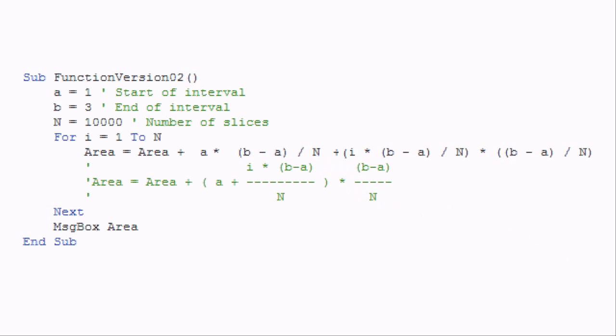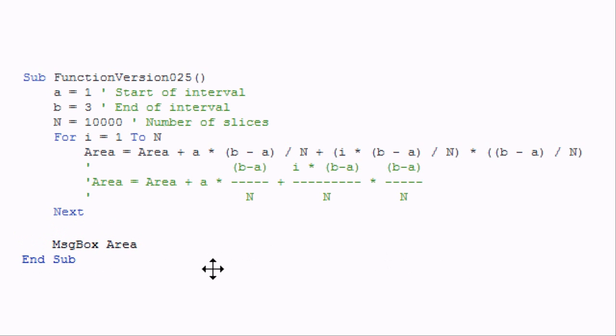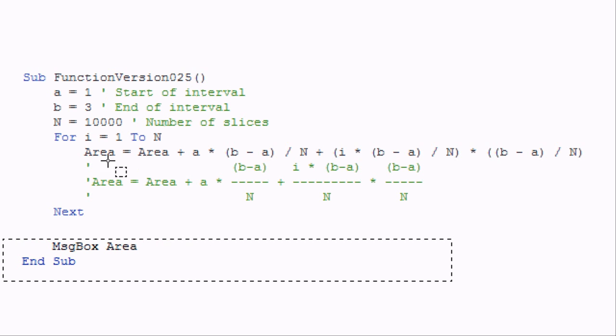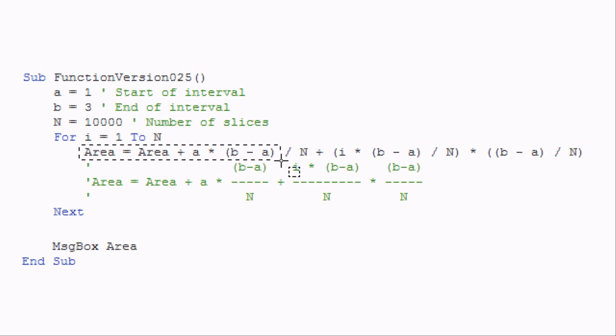Okay, and that gives us our first chunk that we can pull out of the equation. The N times B minus A divided by N. That goes through the loop N times, so that's like multiplying it by N, which cancels out the divide by N. So we only have to copy this part. And we can still remove the divide by N from the formula.